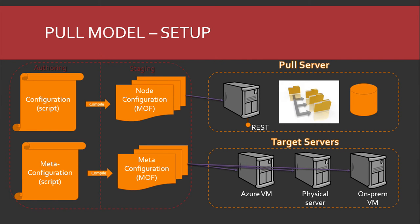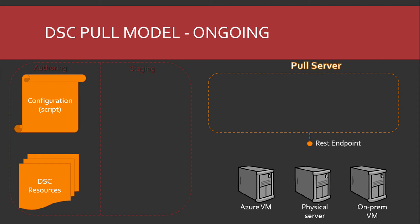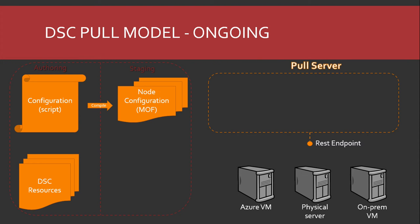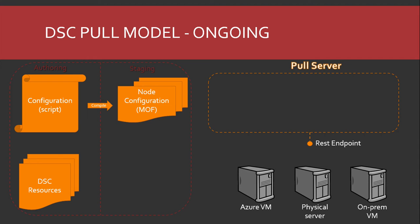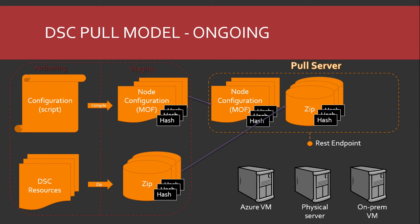For the target nodes, you have a meta configuration, you push it out, and the target nodes know where to go get configurations and pull them down and apply them. Both of these steps apply to V1 and V2. Ongoing, once the pull server is set up, the process involves creating a configuration script, generating the MOF, packaging DSC resources into a zip, running DSC Checksum to generate the hash, copying all that up to the pull server, and then target nodes send reporting data back.